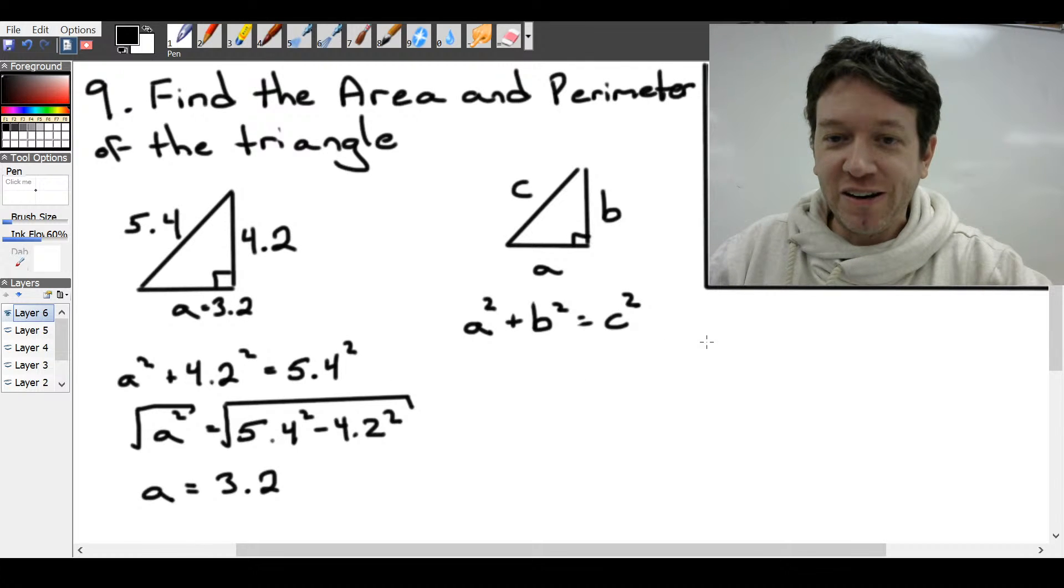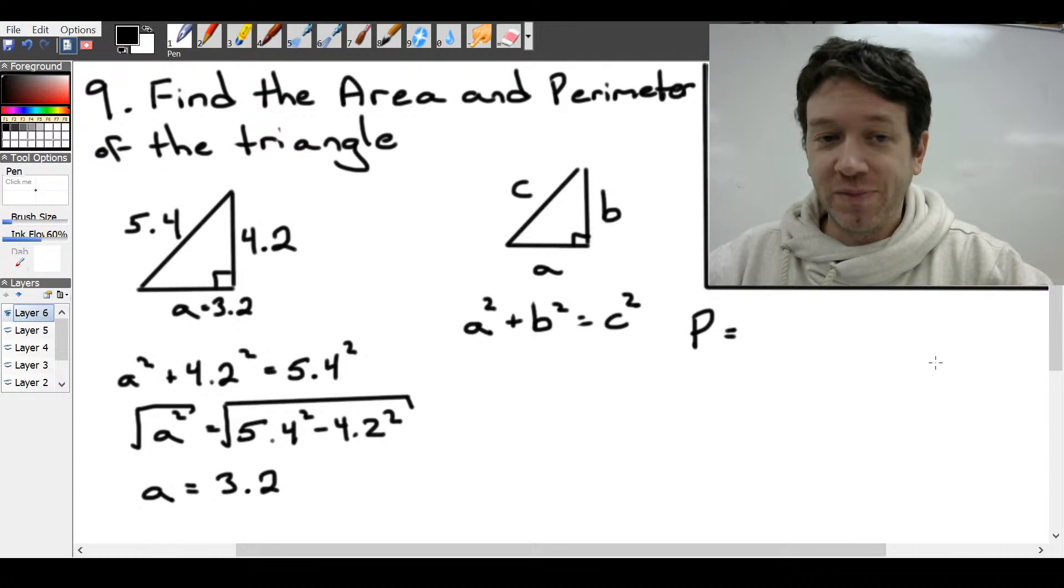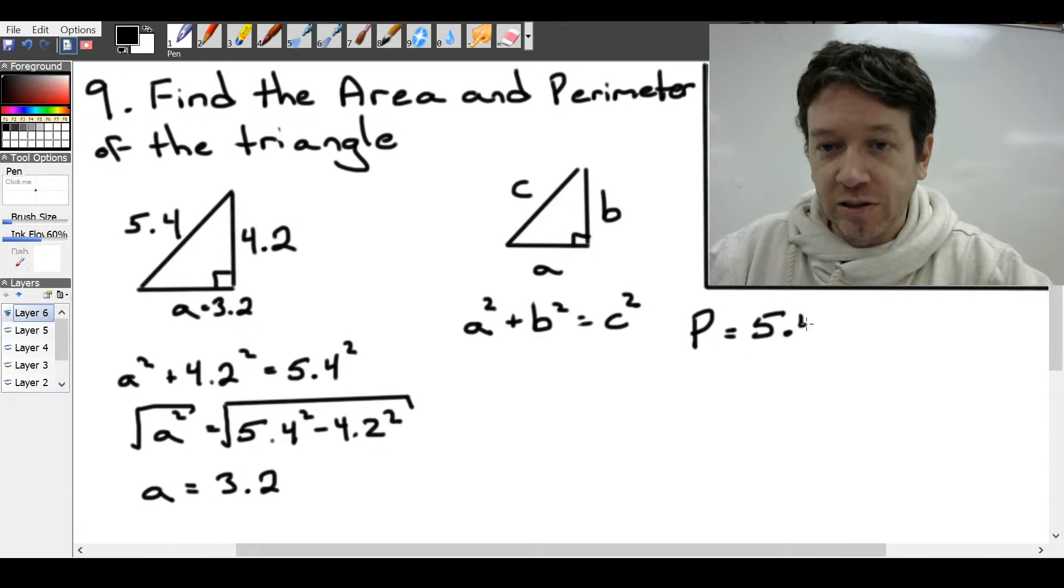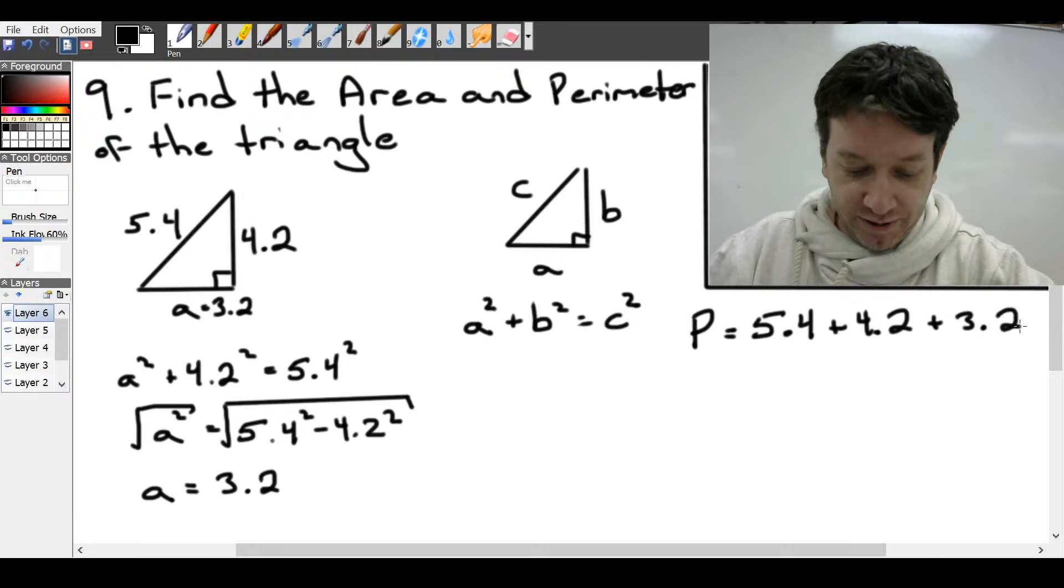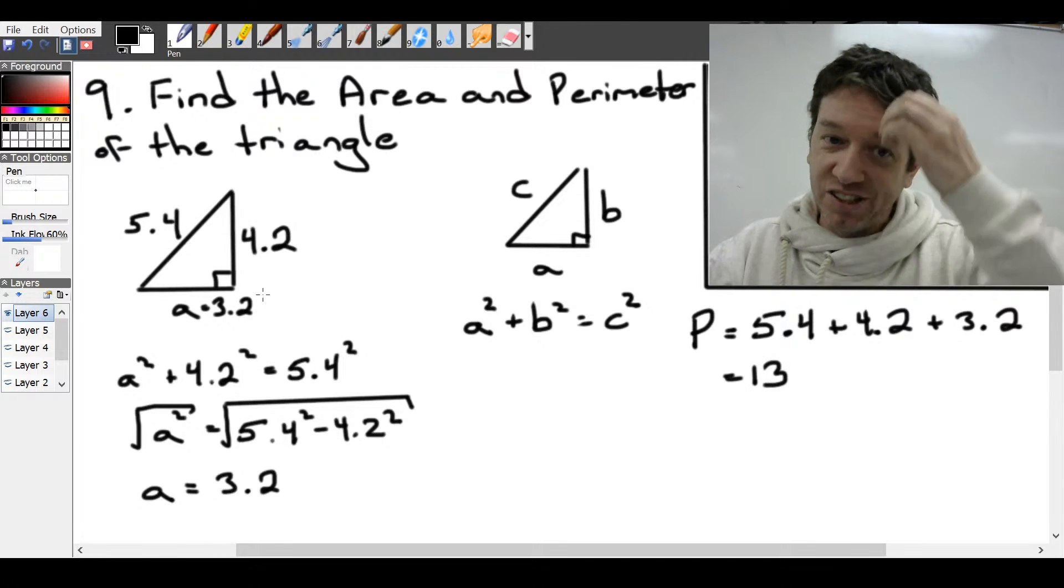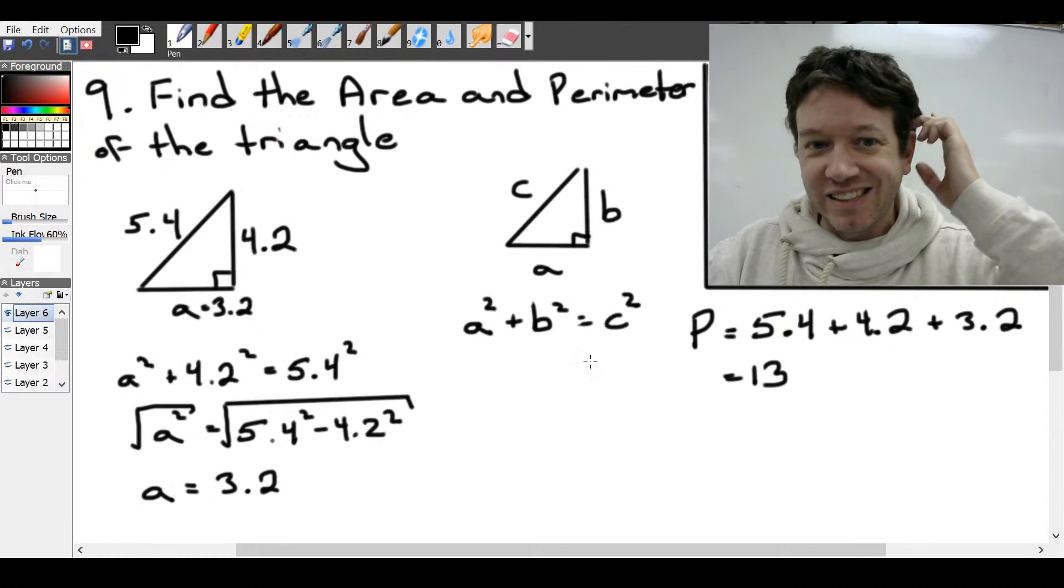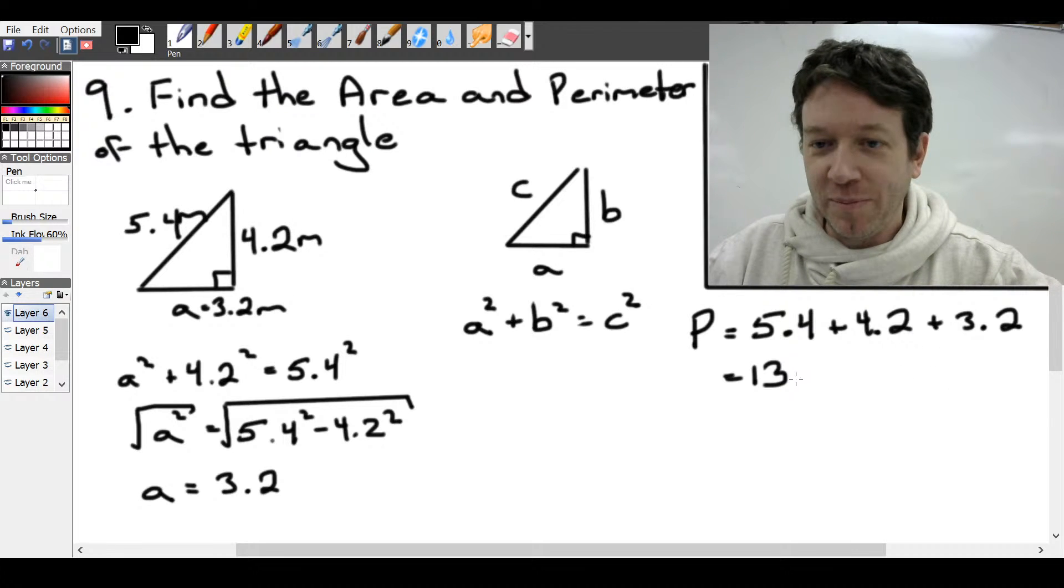So now we can figure out our perimeter. Perimeter is just adding up the sides along the exterior. So we have 5.4 plus 4.2 plus 3.2. And we get a perimeter of 13. There should be units here. Let's just say meters. Let's make them all meters. So 13 meters.